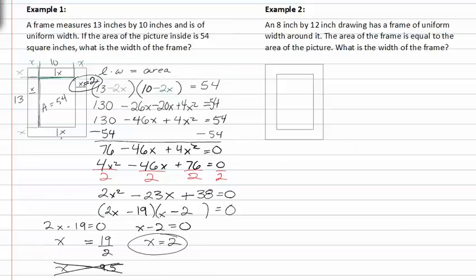In example two we have an eight inch by twelve inch drawing, so this time they give us the dimensions for the picture inside the frame. And it's in a frame of uniform width around it. The area of the frame is equal to the area of the picture. The area of the picture we can simply find by multiplying eight times twelve, which is ninety-six. If we know the frame and the picture are equal in area, we can say the area total is equal to ninety-six plus ninety-six, so area total is equal to one ninety-two.